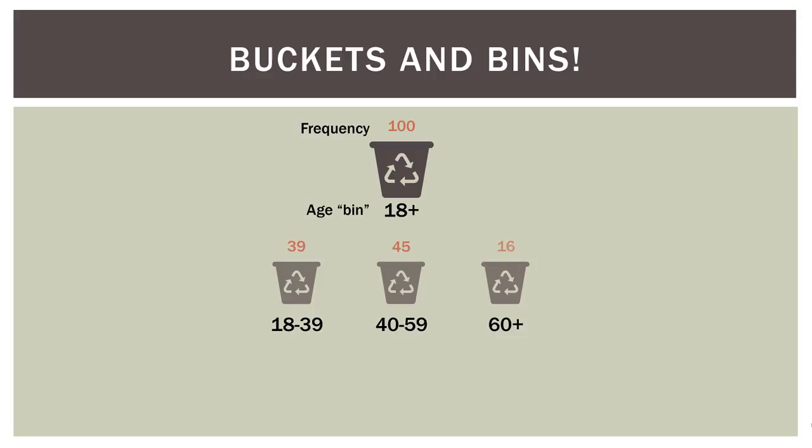So we have 39 people in the first bucket, 45 people in the second one, and 16 people in the third. Splitting people into different buckets by their age gives us a lot better resolution on our data. We can see that our data set is definitely skewed towards younger individuals — 39, 45, and then 16. We don't have very many people over 60 in our sample using smartphones, so we have a much better idea of the distribution of our data as far as age goes.